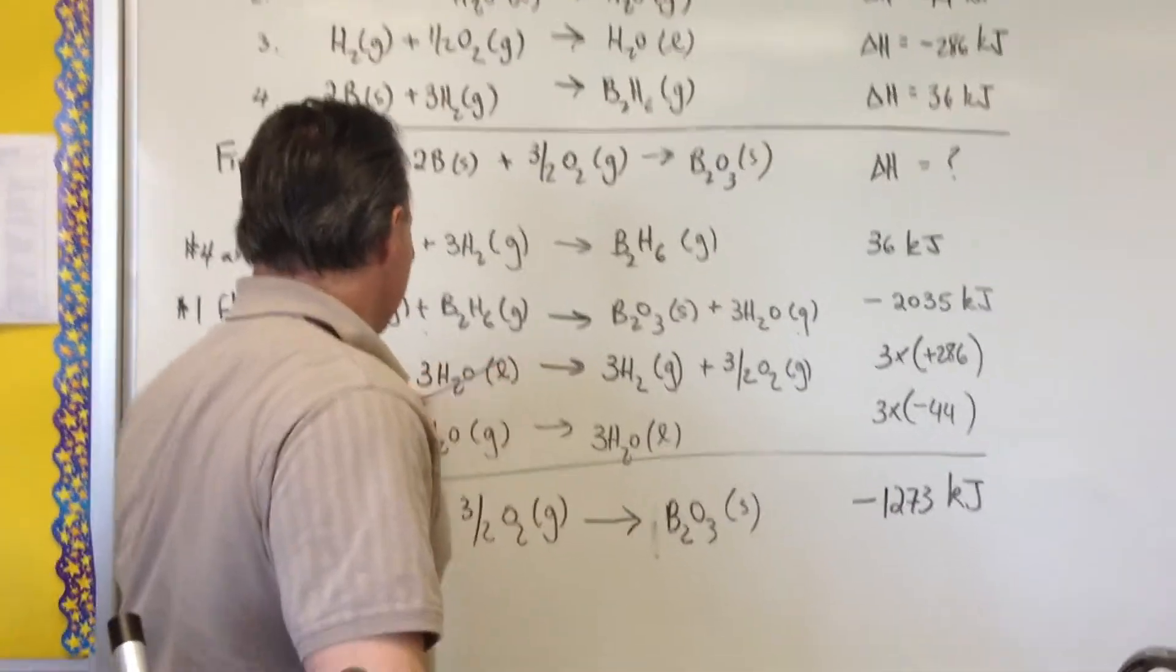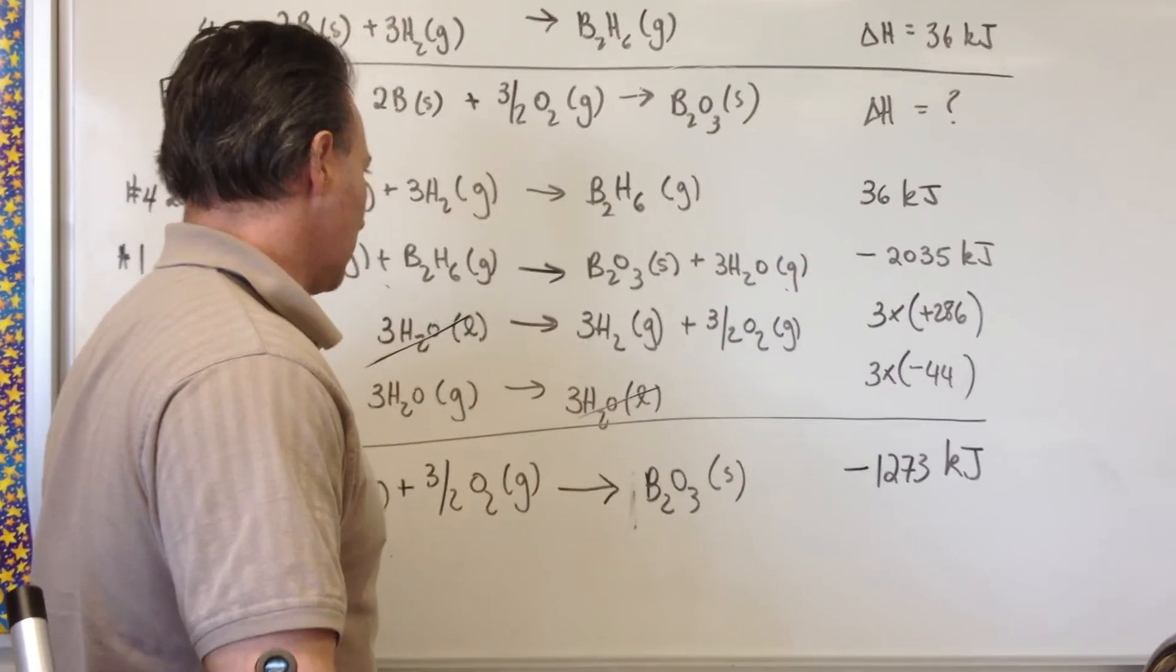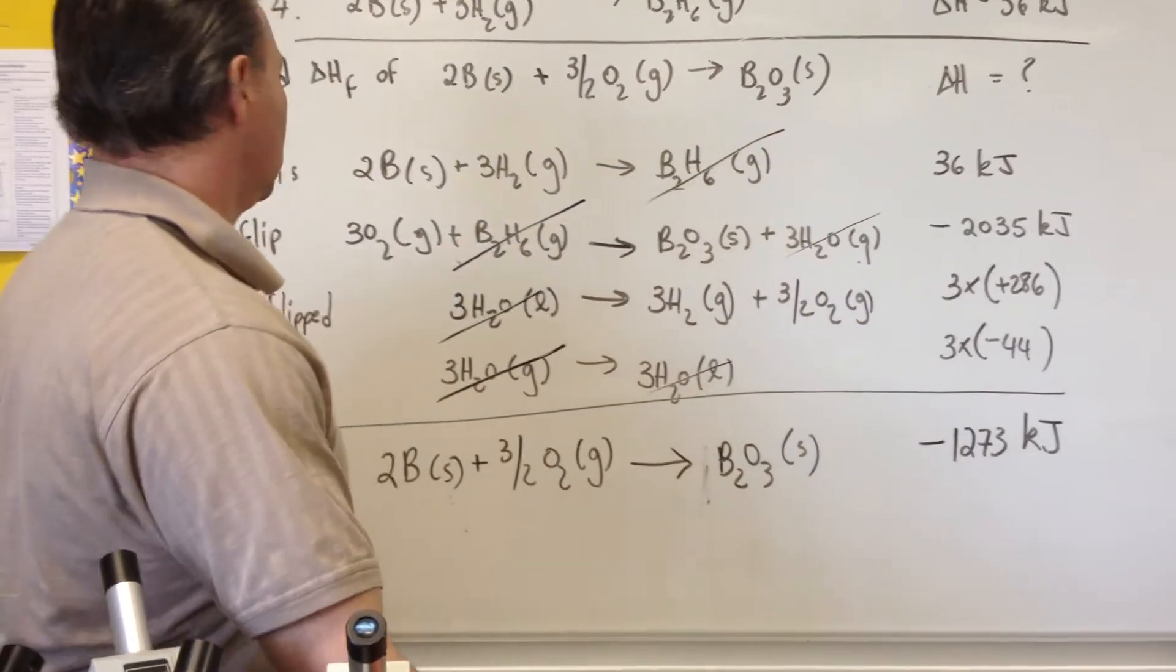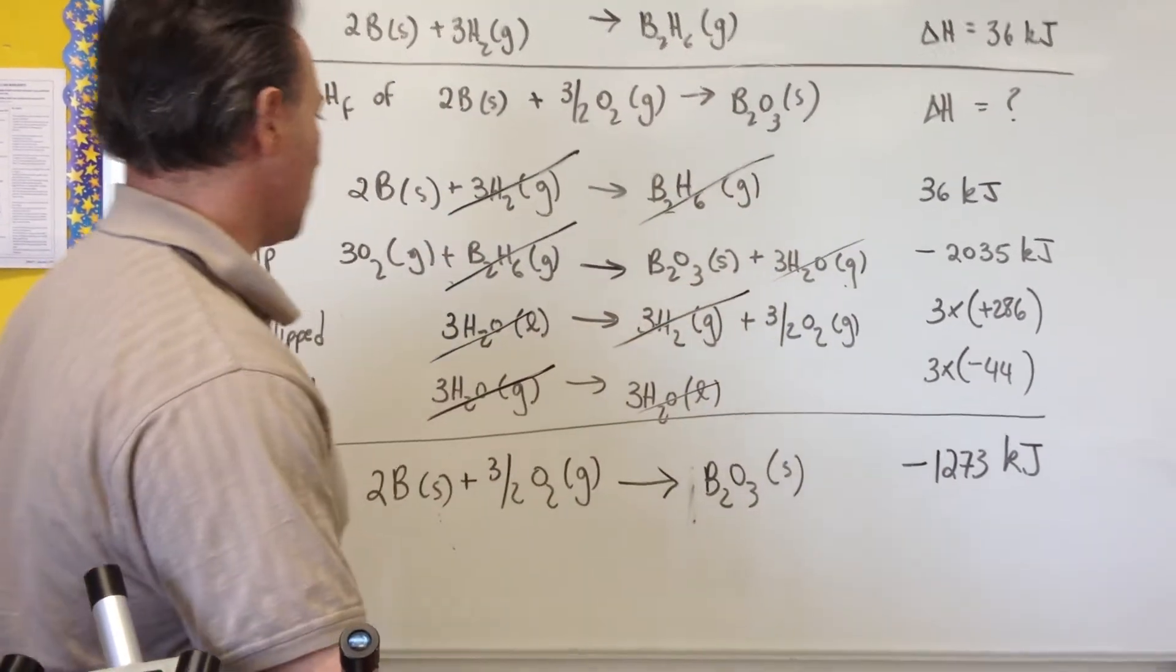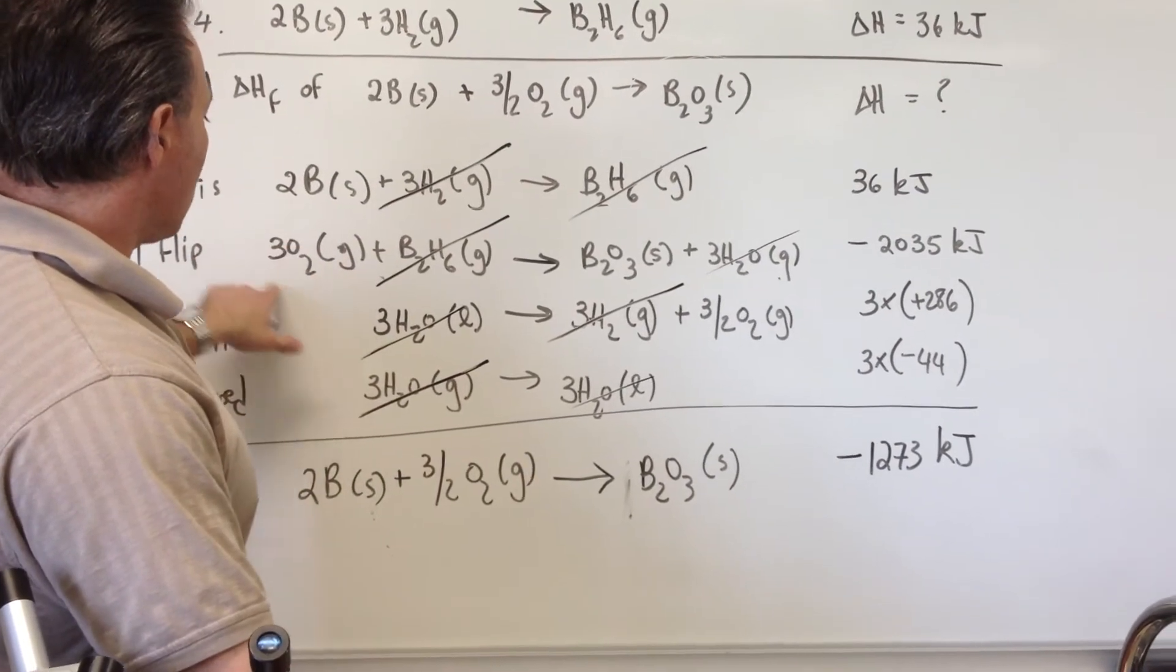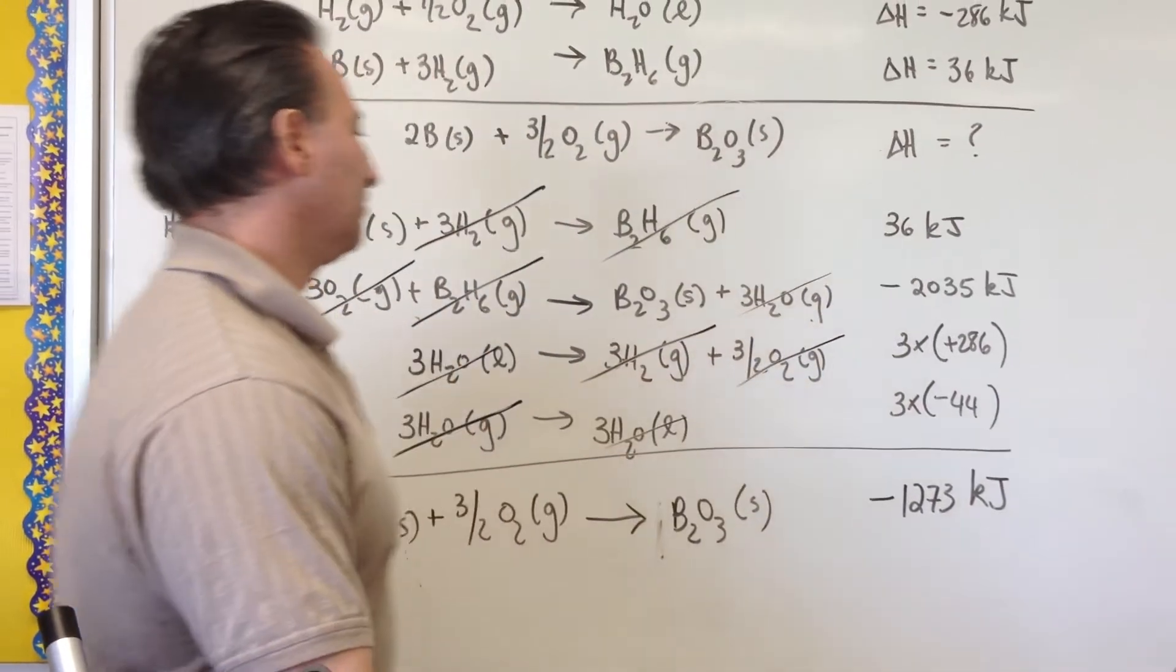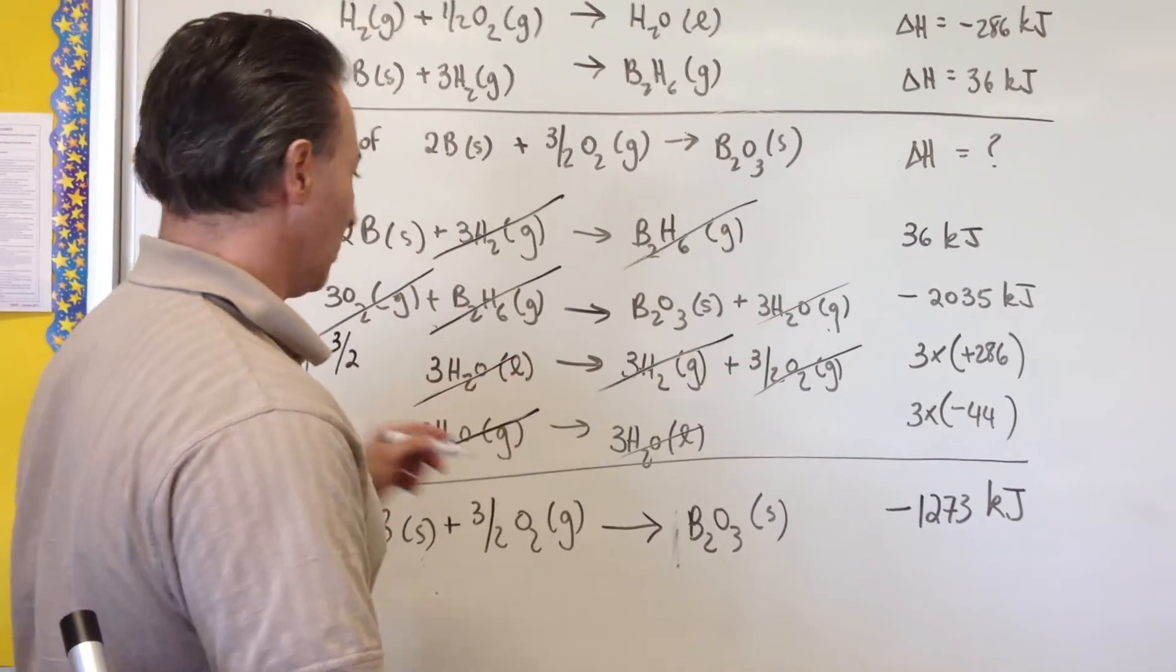So we see that liquid water disappears because it appears on the left and on the right. Gaseous water also appears on both sides. B2H6 appears on both sides. The H2 gas, three of them, on both sides, disappears. And the only tricky thing here might be where you have three oxygens on the left and 3 over 2 oxygens on the right. That too will partially eliminate, you're going to be left with 3 over 2 oxygens on the left, because 3 minus 3 over 2 gives you 3 over 2.